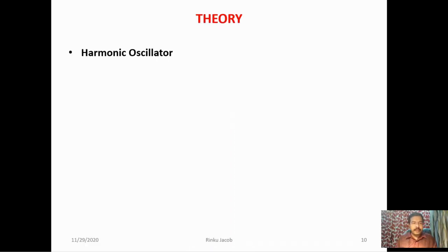Now let us look into the theory behind this experiment. Before discussing the electrical oscillator as a forced harmonic oscillator, we need to understand the difference between a simple harmonic oscillator, a damped harmonic oscillator, and a forced harmonic oscillator. These oscillators can be mechanical or electrical in nature. For comparison, we begin with the mechanical oscillator, considering a system with a mass attached to a spring.